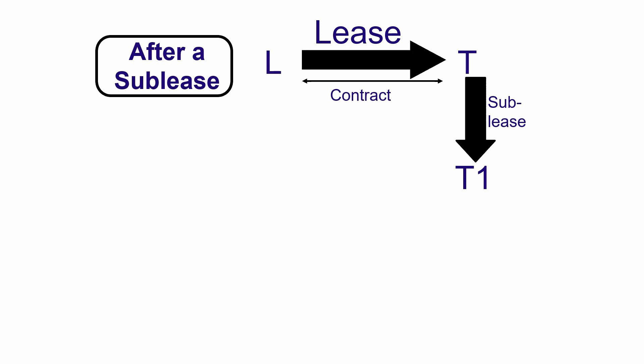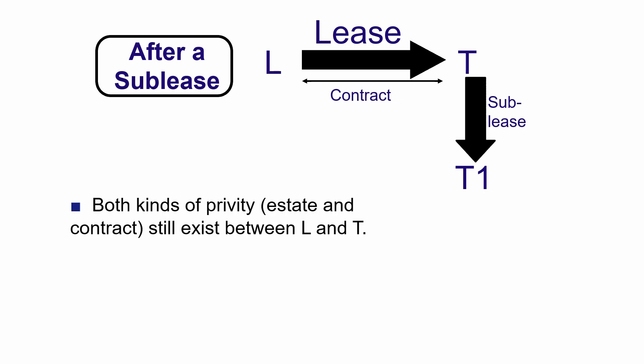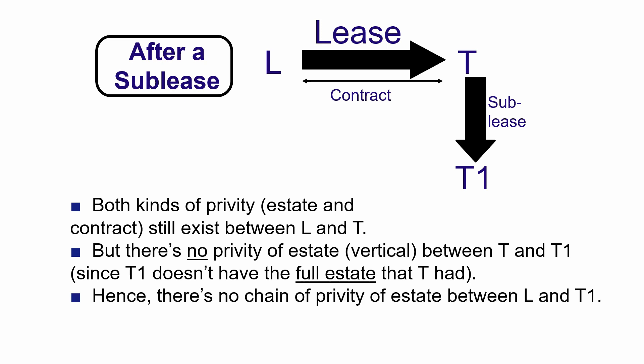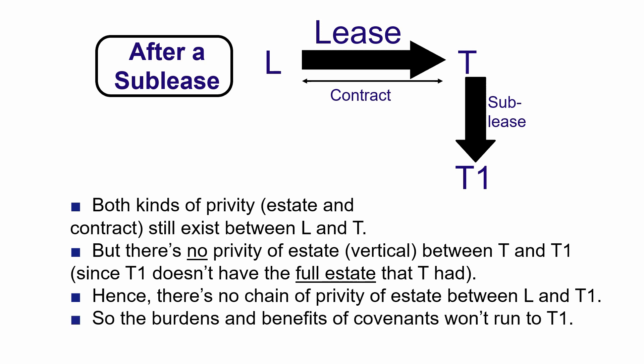Now suppose T makes a sublease instead of an assignment to T1. Both privity of estate and privity of contract still exist between the original landlord and original tenant. However, there is no vertical privity of estate between T and T1, because in a sublease T1 doesn't get the full estate the original tenant had. Therefore there is no chain of privity of estate between the landlord and T1, and the burdens and benefits of the original lease covenants will not run to T1.